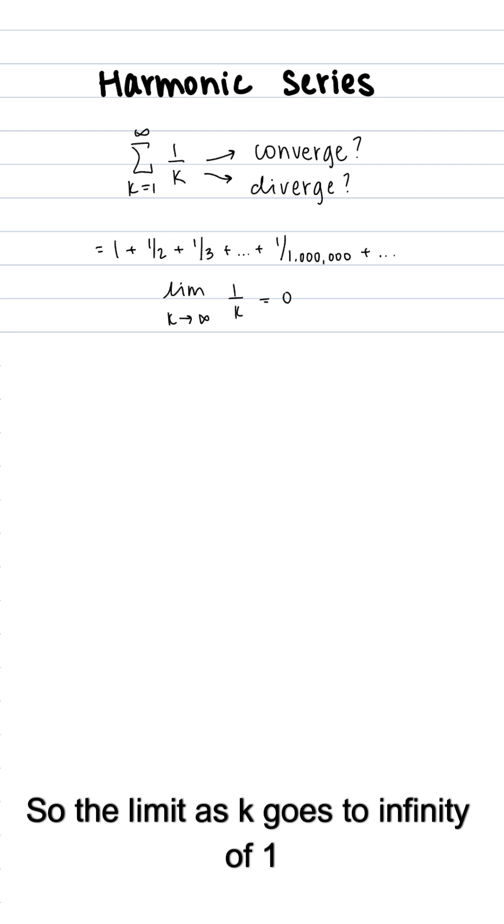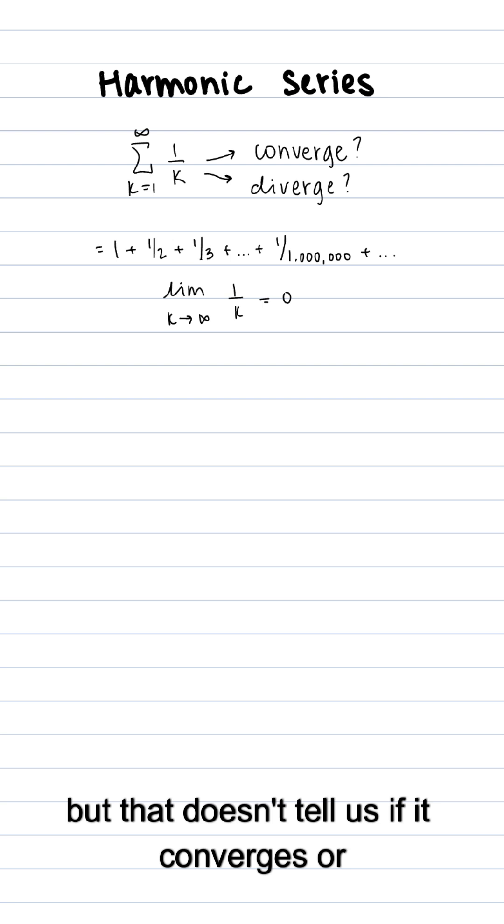So the limit as k goes to infinity of 1 over k is equal to 0, but that doesn't tell us if it converges or diverges.